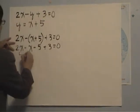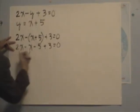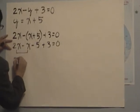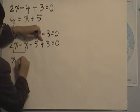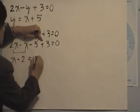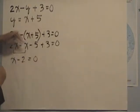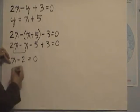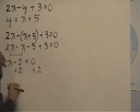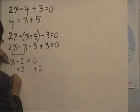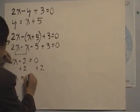Now we have like terms. So 2x minus x is x, negative 5 plus 3 is negative 2, equals to 0. We want to know what x is, so we want to add plus 2 to both sides. Then we have x equals to 2.